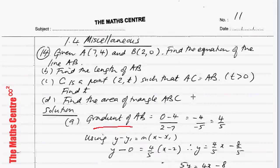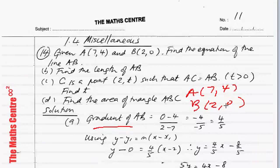A is (7,4) and B is (2,0). Using Y2-Y1 over X2-X1: 0-4 over 2-7. Clean this up, you will get the gradient of AB is 4 over 5.